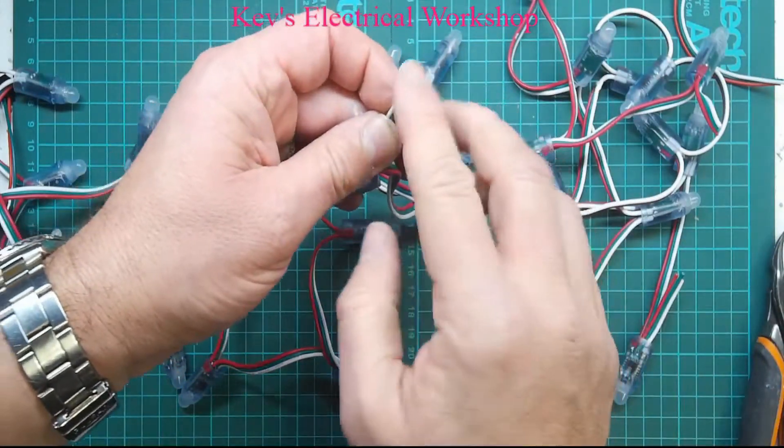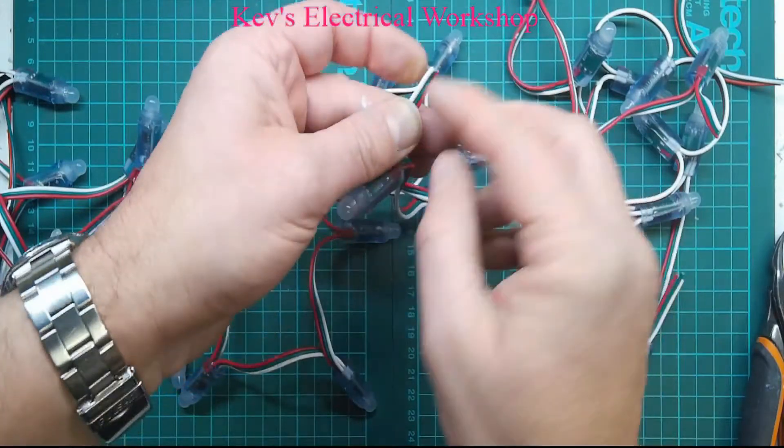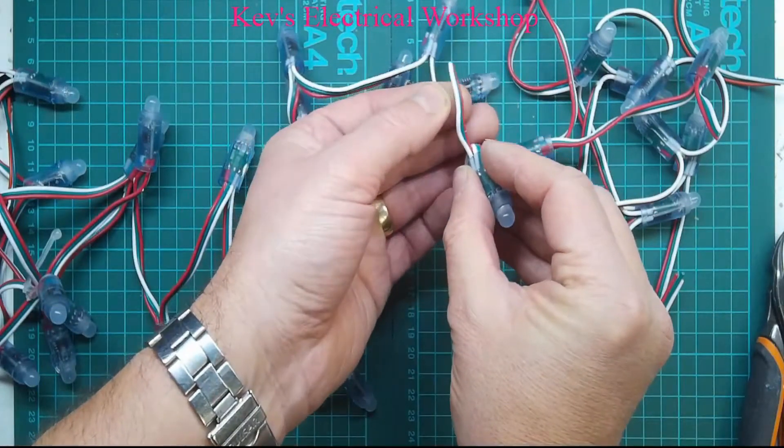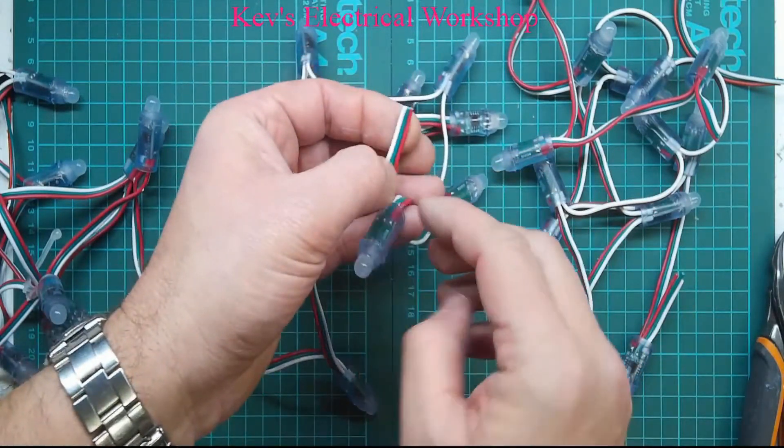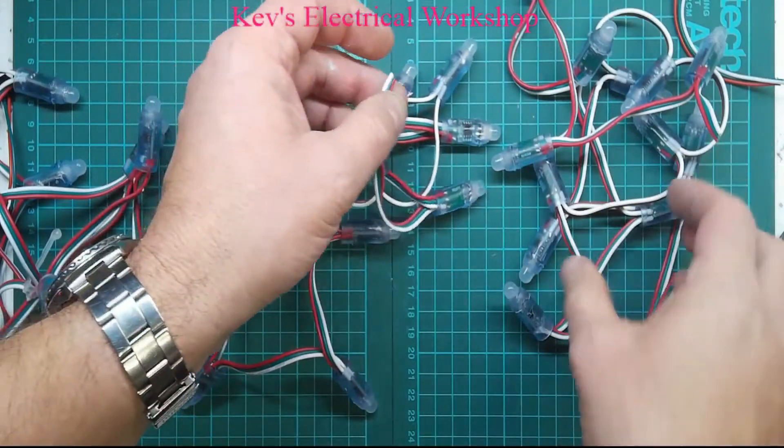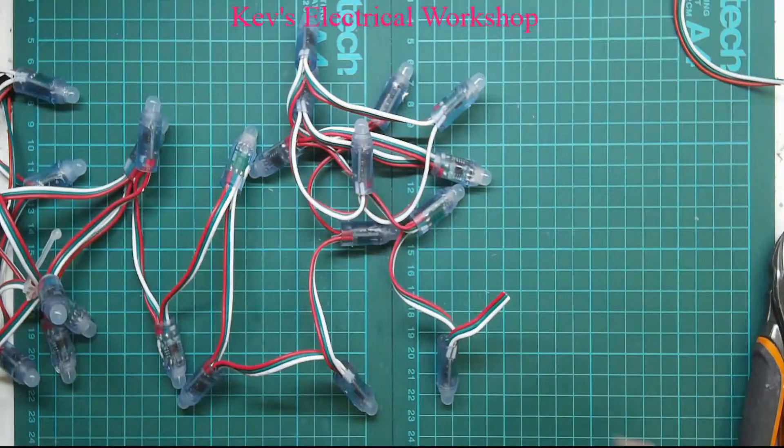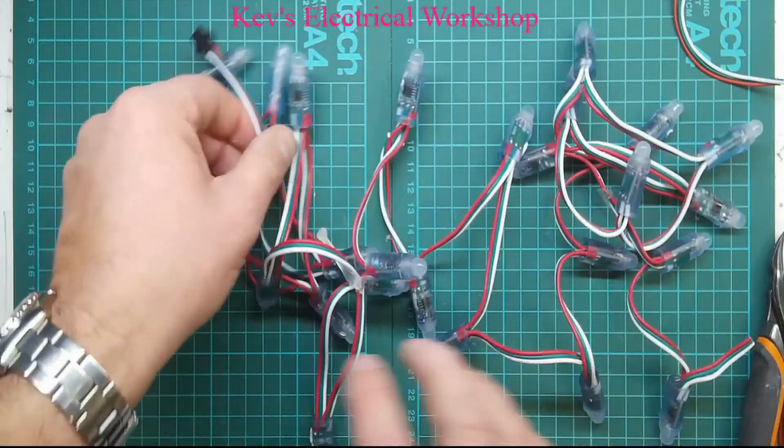I want to cut that, making sure nothing's shorted here. I've left a bit of length so I can put more on if need be. So we have our 26 LEDs with a plug here and a socket here.